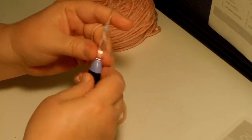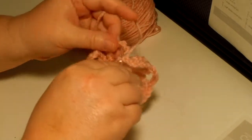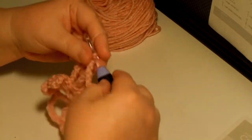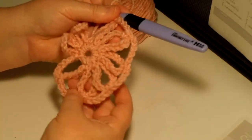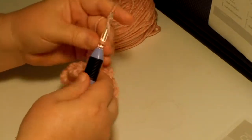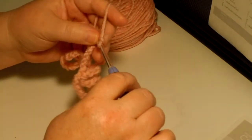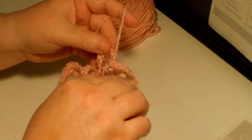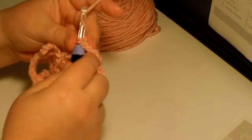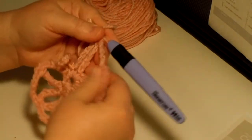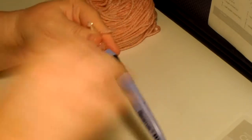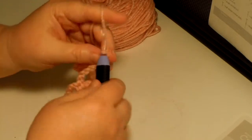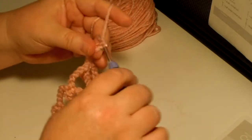One, two, three, four, five, going to that chain eleven space and do a single crochet. Starting to come together. One, two, three, four, five, go right there, do a single crochet again. So this is an easy round, so easy. One, two, three, four, five.